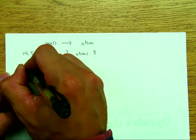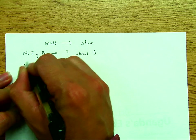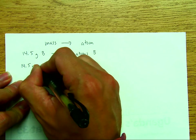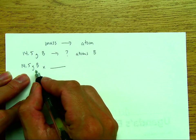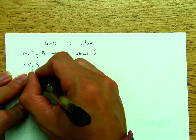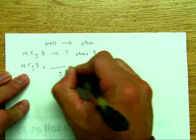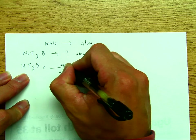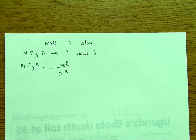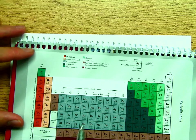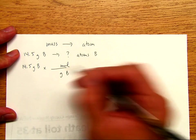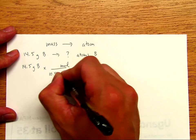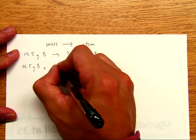First, we always rewrite the number — 14.5 has three sig figs. The first step is to convert from mass to mole. To cancel mass, we write grams of boron on the bottom and mole on top. The molar mass of boron is 10.81, so we have 10.81 grams per mole — 10.81 grams goes on the bottom and one mole goes on top.